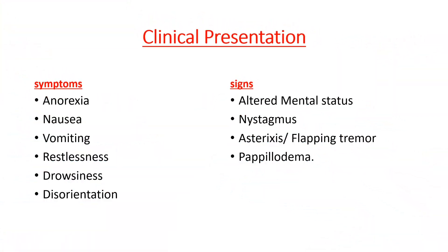Clinical presentation: the patient presents with symptoms of anorexia, nausea, vomiting, restlessness, drowsiness, disorientation, and in severe cases the patient may present with coma. The signs of uremic encephalopathy include altered mental status, nystagmus, asterixis and flapping tremor as seen in the previous video, and on fundus examination we can find papilloedema.